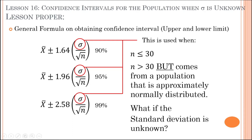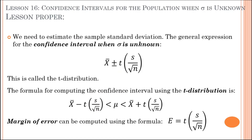However, what if the population standard deviation is unknown? We can still compute it. Through the formula, we need to estimate the sample standard deviation. The general expression for the confidence interval when the standard deviation is unknown is x-bar plus or minus t multiplied by the ratio of the sample standard deviation over the square root of n. This t is the t-value that we will get from the t-distribution.